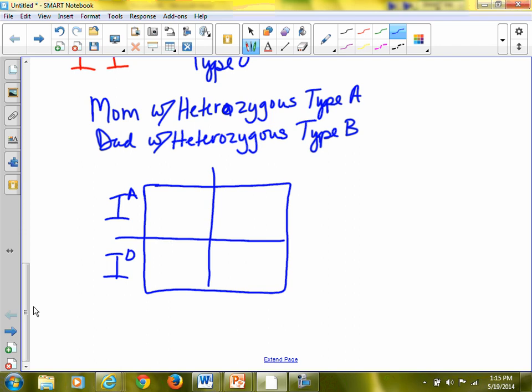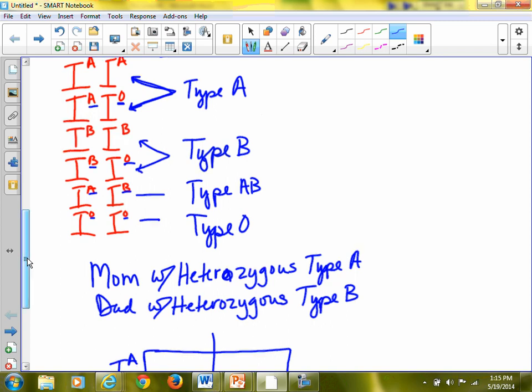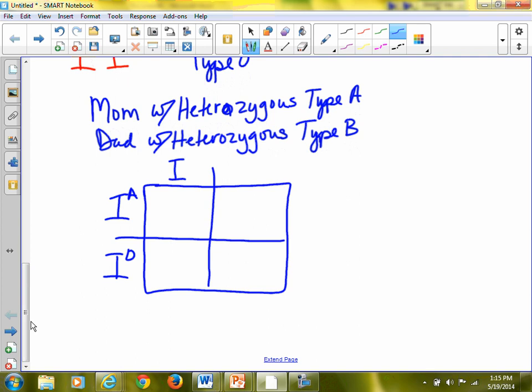And Dad is same thing. Heterozygous type B. So we look at type B. The only one that's heterozygous is the BO. Because O is recessive. So we have IB, IO. We fill this out. We still always put the dominant first. So then we would say that the genotypes are AB, AO, BO, and OO.